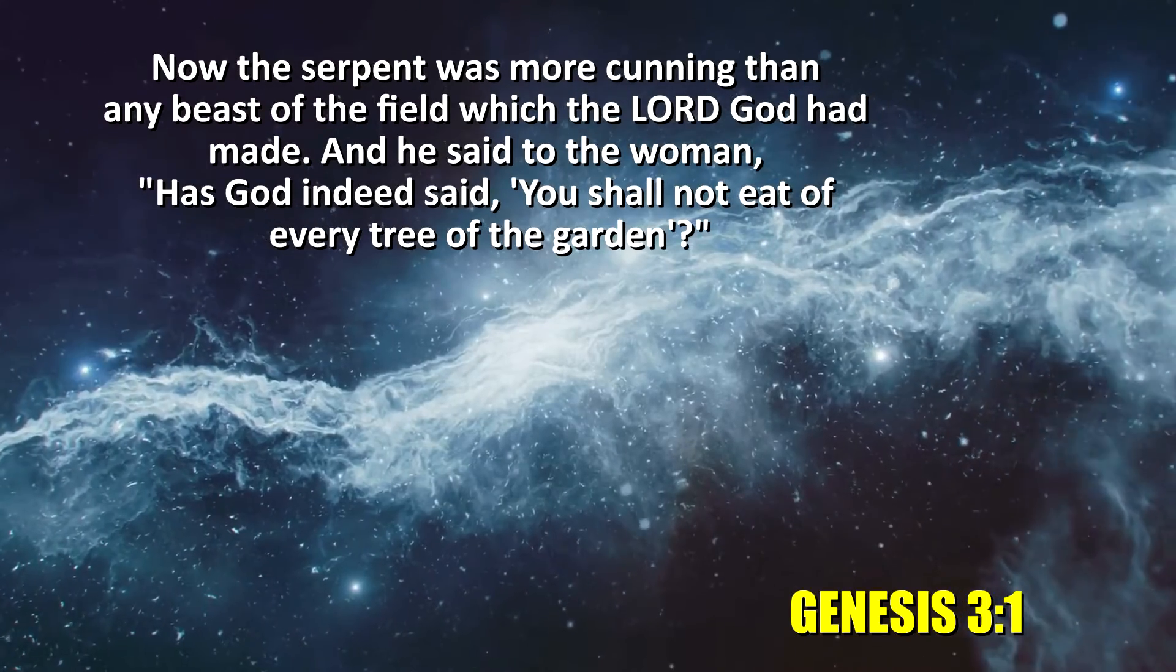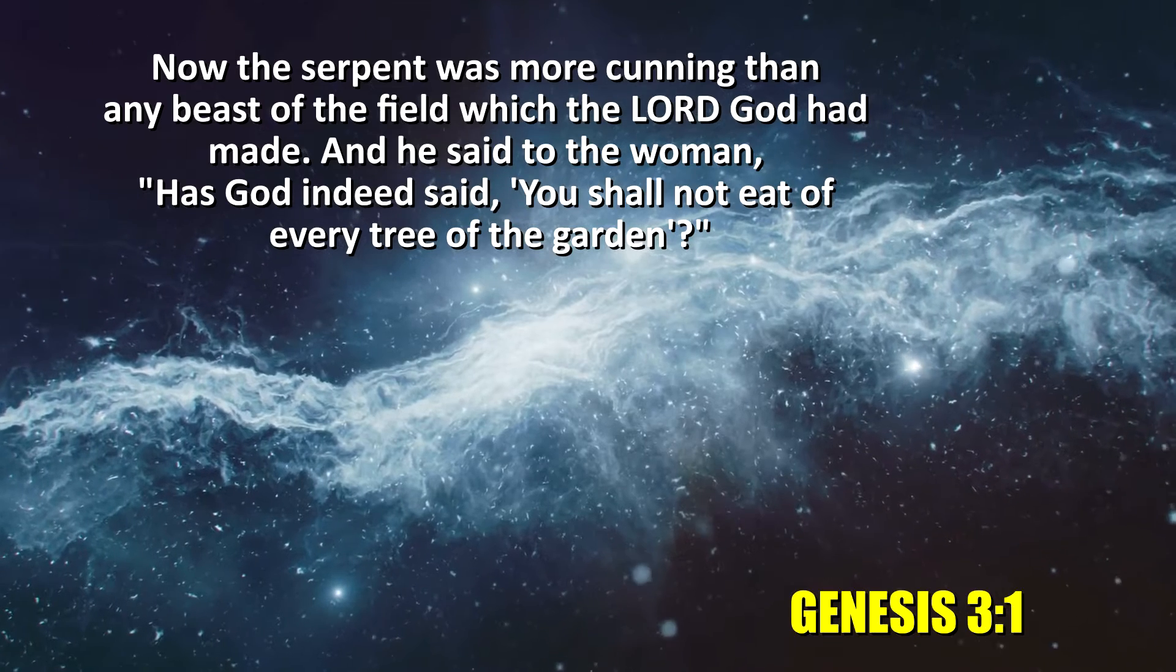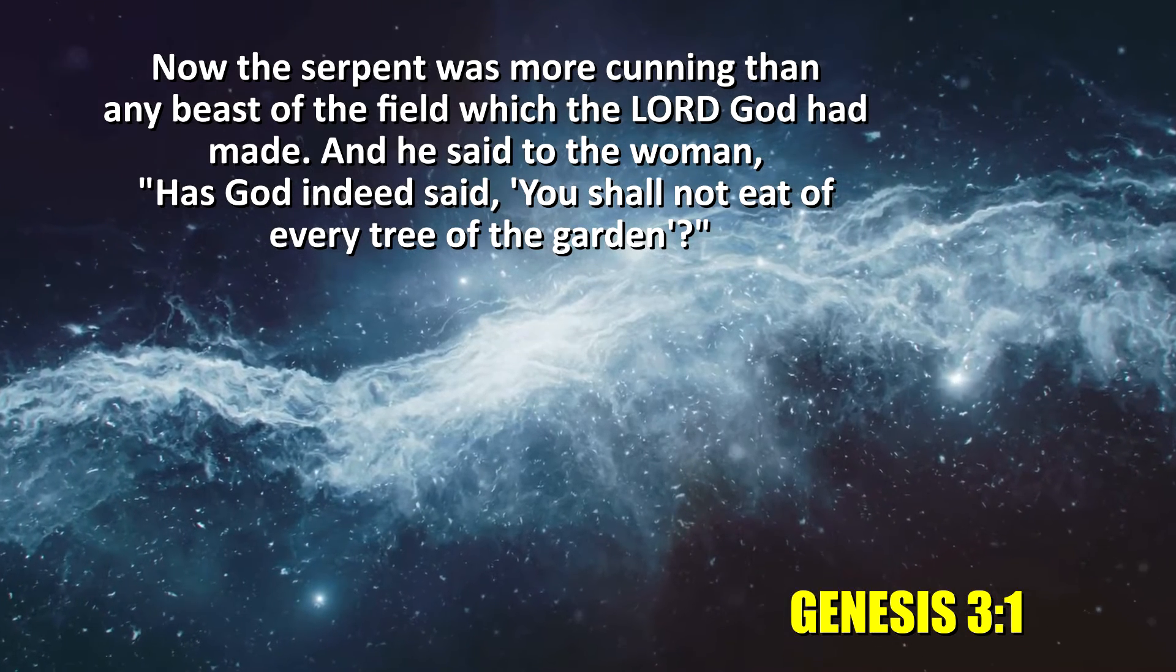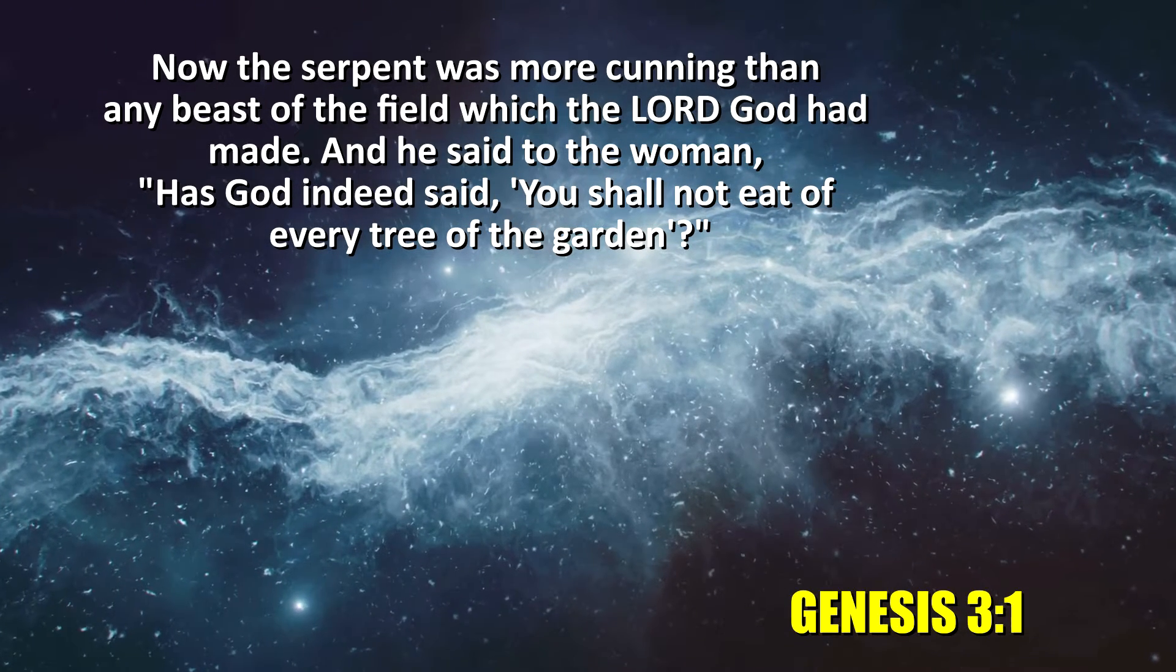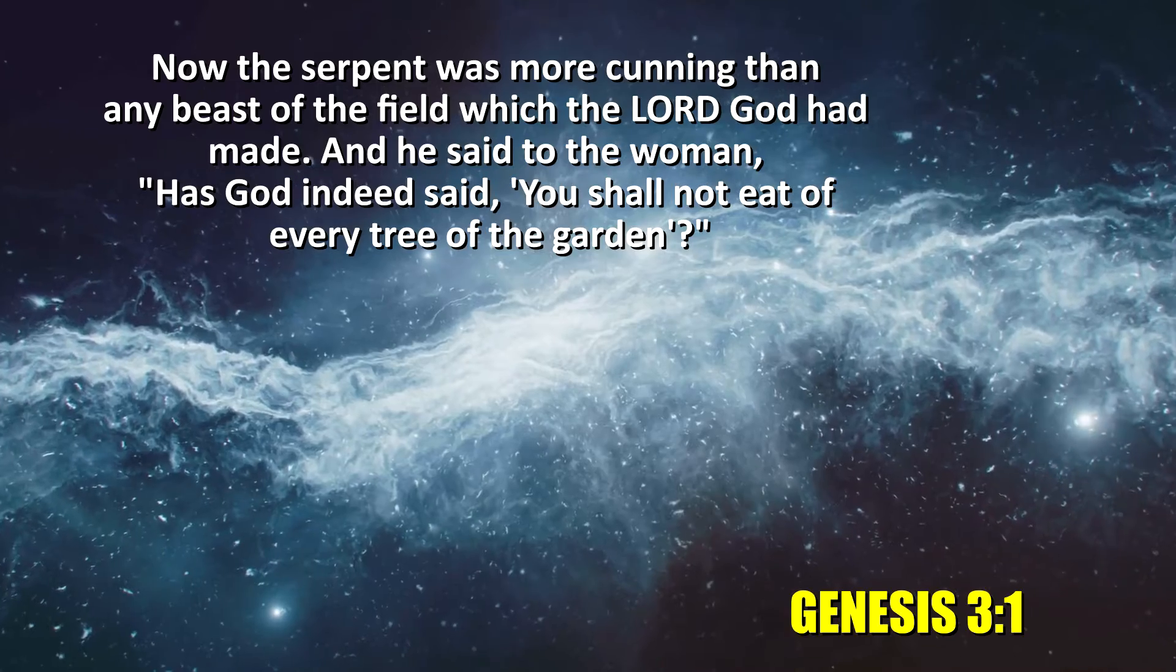Genesis 3 verse 1: Now the serpent was more cunning than any beast of the field which the Lord God had made. And he said to the woman, Has God indeed said you shall not eat of every tree of the garden? So here we see the serpent is now upon the earth, cast out of heaven because he sinned, transgressed God's law in heaven. That serpent was cast out according to Revelation chapter 12. And here we find that devil, the serpent, in Genesis chapter 3, deceiving the woman.